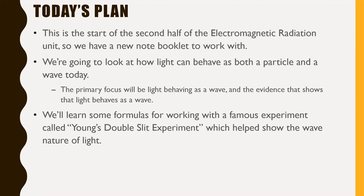We're going to look at how light can behave today as both a particle and as a wave. The primary focus will be light behaving as a wave, and we'll also look at the evidence that shows that light behaves as a wave as opposed to behaving as a particle. It can behave as both, but we're going to be focusing on the evidence that it behaves as a wave. We're going to learn some formulas for working with a famous experiment called Young's Double Slit Experiment, which helps show the wave nature of light.